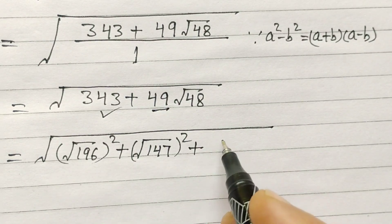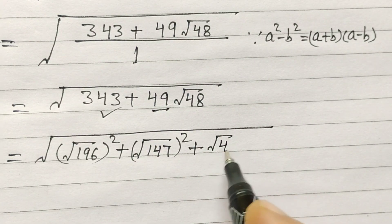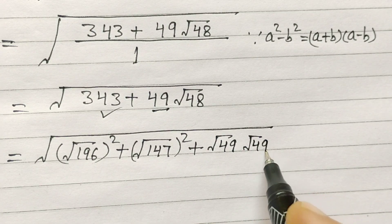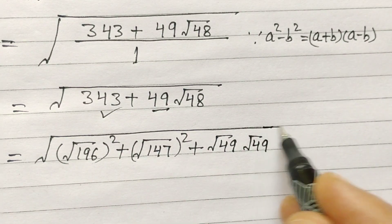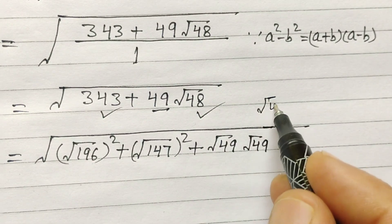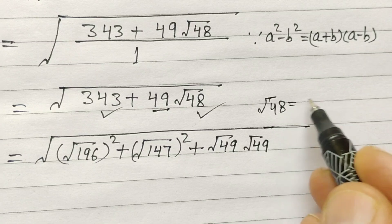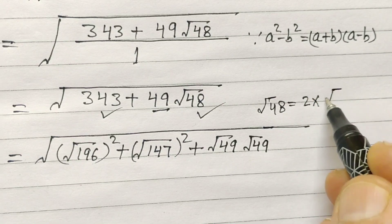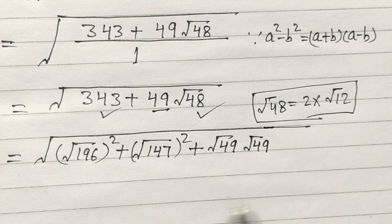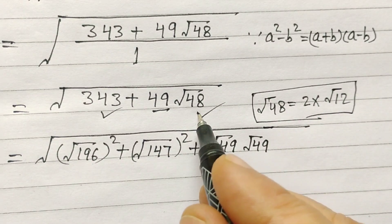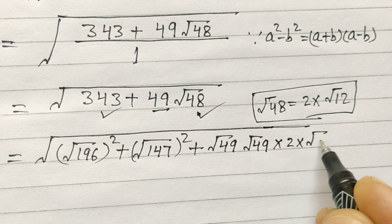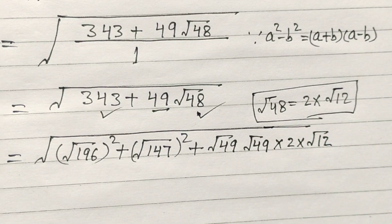And 49 can be written as square root of 49 into square root of 49, into square root of 48. Square root of 48 can be written as 2 into square root of 12, so in place of square root of 48 we write 2 into square root of 12.